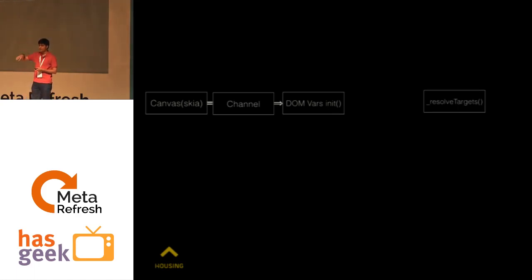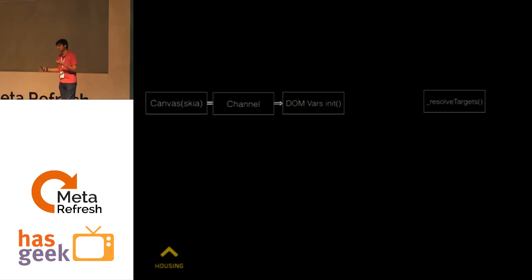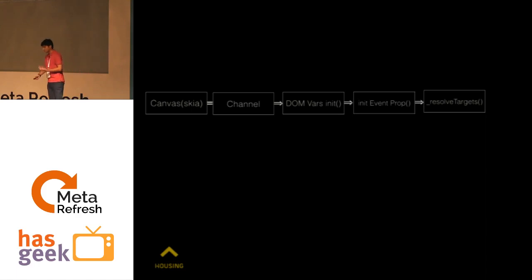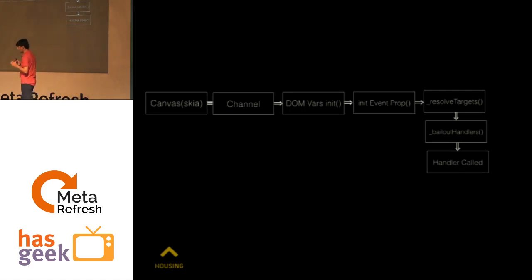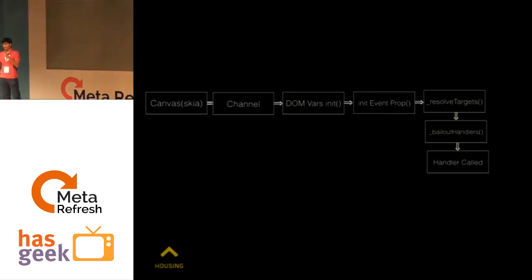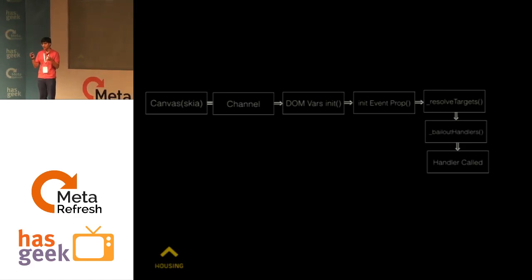Then there's result target resolution. All those nodes in the capture phase have to be resolved — the DOM doesn't know where the event occurred and has to figure it out. The DOM tree that had the event is identified. In between, 'init of event property' — these are C++ functions if you go deeper into the browser's code. These are the actual functions happening beneath the hood, which we don't know. Then bailout handlers, and finally your handler gets called. This is how an event acts.